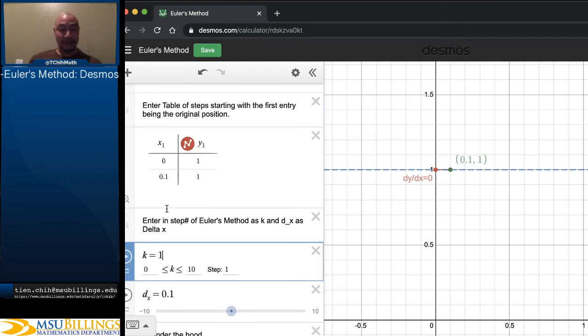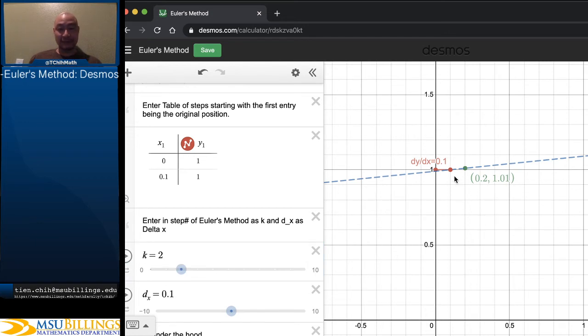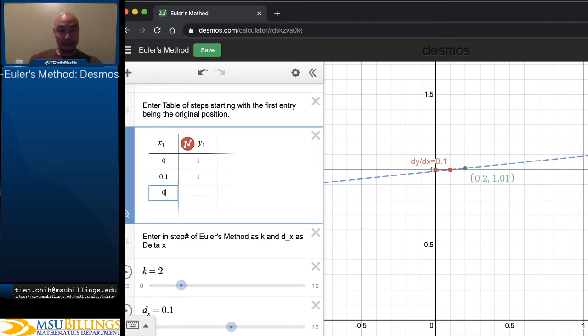And I move on to step 2. As I move on to step 2, now I'm at this point. 1 times 0.1, that's slope 0.1. And so if I go forward by another 0.1, I go up by another 0.1. So my next step is (0.2, 1.01).